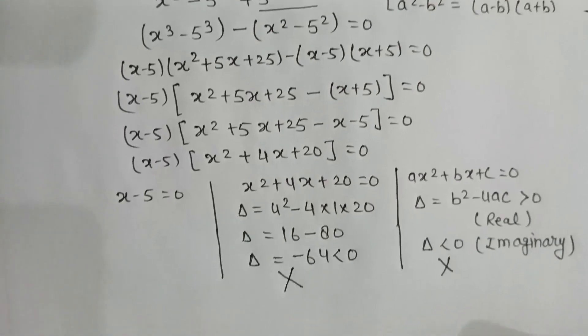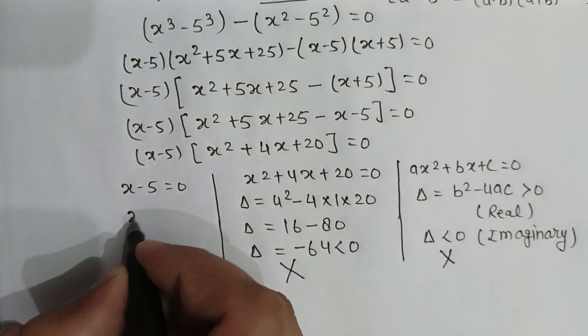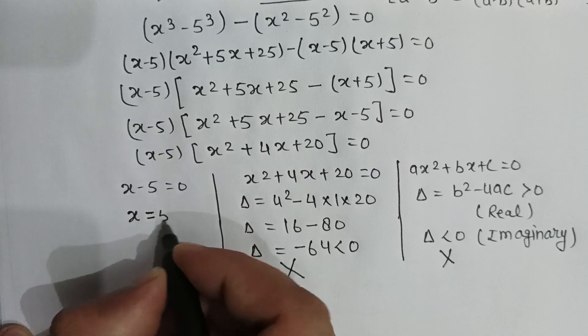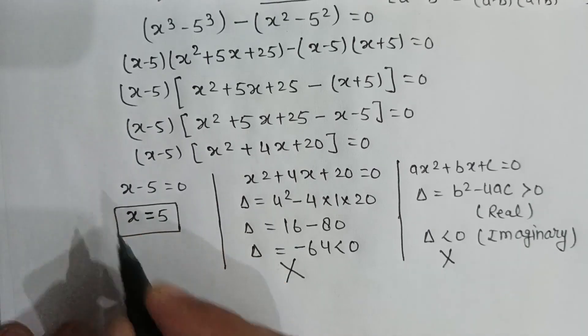Since the discriminant is less than 0, we can reject those two roots. So the value of x will be x equals 5.